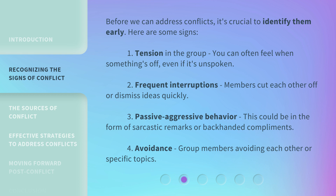2. Frequent interruptions — members cut each other off or dismiss ideas quickly. 3. Passive-aggressive behavior — this could be in the form of sarcastic remarks or backhanded compliments. 4. Avoidance — group members avoiding each other or specific topics.